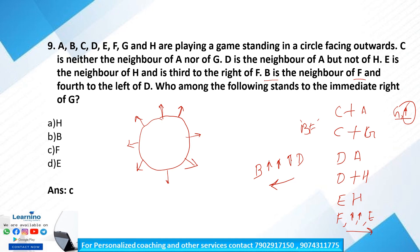We identify definite clues first: B is fourth to the left of D, so four positions left of D is B (or equivalently, four to the right of B is D). Mark D's position and count four left to place B. Next, B and F are neighbors. We also need E to be third to the right of F, so we try F in various positions to satisfy both conditions.